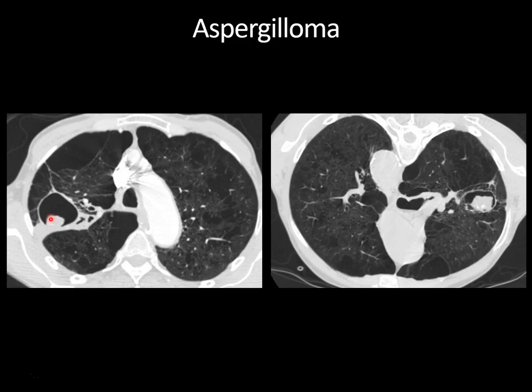This appearance of a solid nodule with surrounding gas is known as the Monod sign — M-O-N-O-D — which describes the gas surrounding the fungus ball in a cavity. Technically, that's different from the air crescent sign, which you see in patients recovering from angioinvasive aspergillosis. Some sources use these terms interchangeably, and I'll leave it up to you to decide how much of an academic battle you want to get into with your colleagues about the nomenclature of aspergillosis.